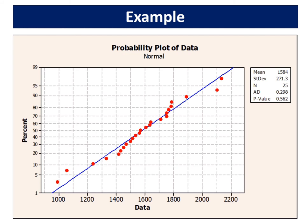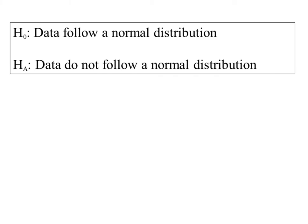The Anderson-Darling test is 0.298 while p-value is 0.562. As mentioned previously,